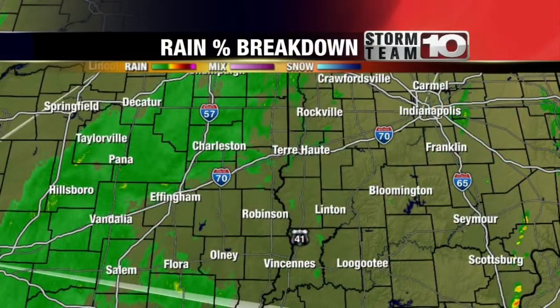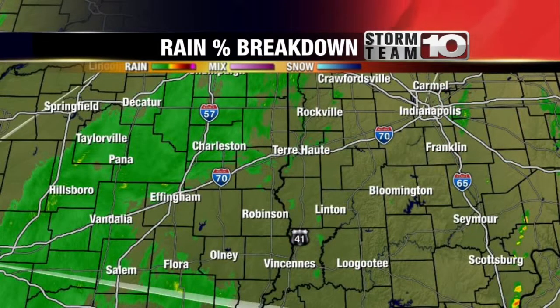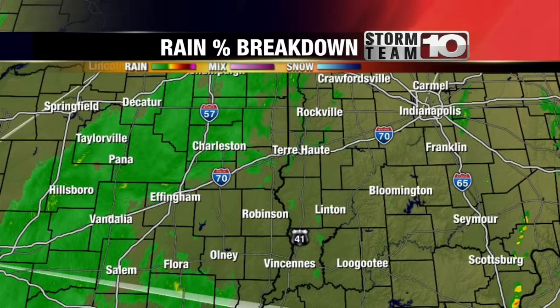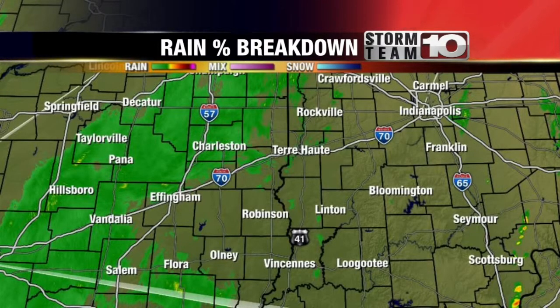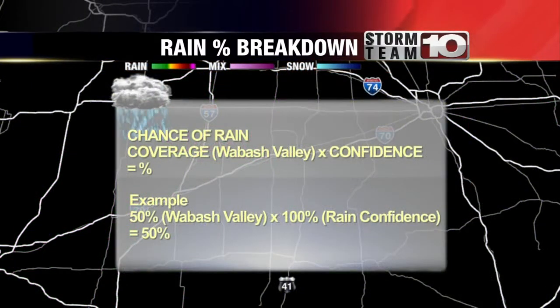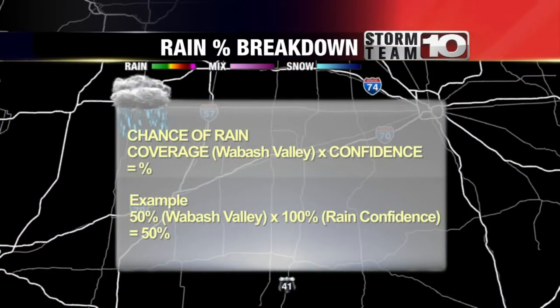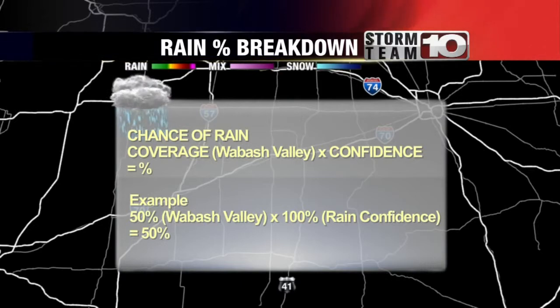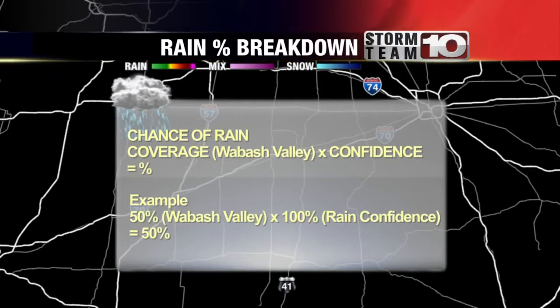Well, this is how we break it down. When we forecast rain, we are working with a probability of precipitation. We're going to have to go back to math class a bit here. How it works is we take the percentage of the forecast region — for us, that is the boundaries of the Wabash Valley — and we multiply that by our confidence to receive rain.